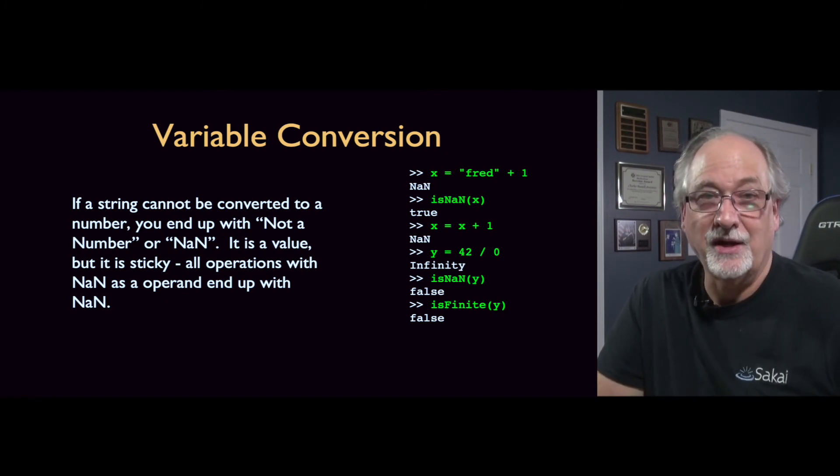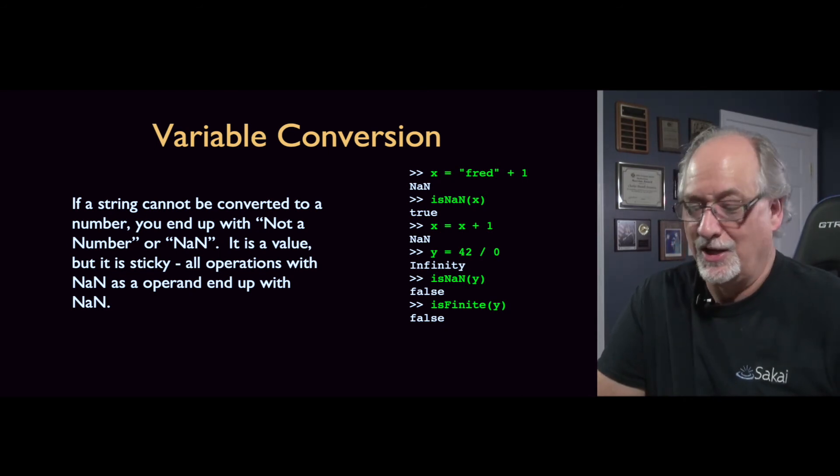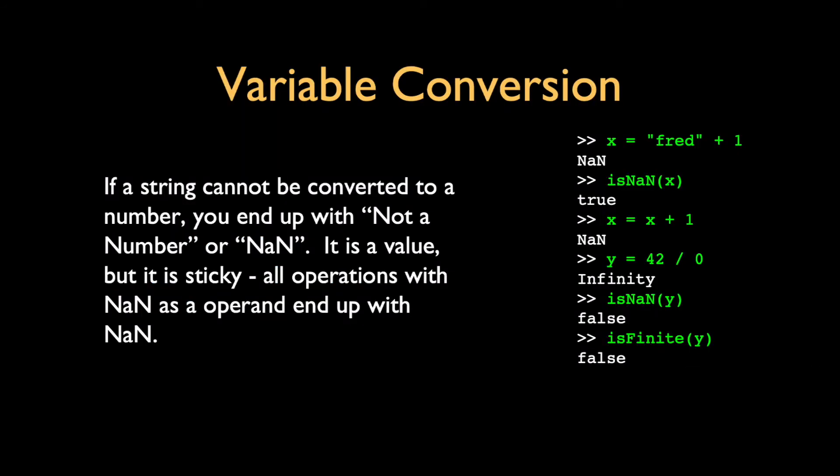And once you get something that's a NAN, it's very, very, very sticky. But it doesn't blow up. It just keeps running and shows you NAN in your user interface. So, if a string can't be converted because of mathematical operation, you get a NAN. There is a function called isNAN that gives you a true-false, like is there a NAN? NAN is a value. It's not the lack of a value. Something like null or null would be a lack of a value. Or empty in Python would be the lack of a value. IsNAN is an actual value.